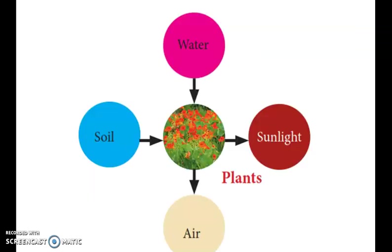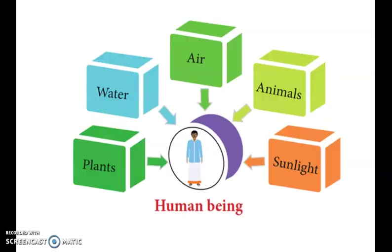For example, plants are dependent on soil, water, sunlight and air. In this picture, human beings are dependent on water, air, animals, sunlight and plants.